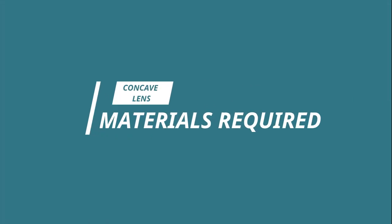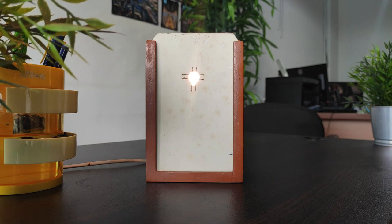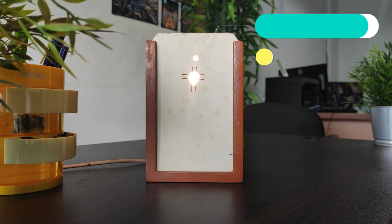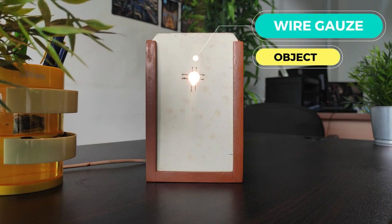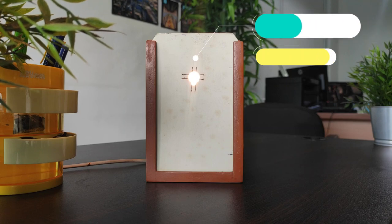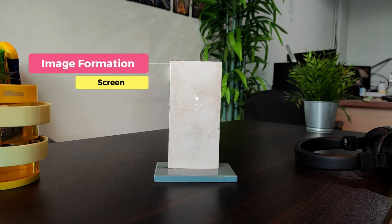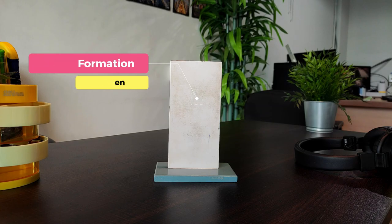Let's take a look at the materials you'll need for this experiment. We need an object first and foremost. Illuminated wire gauze acts as an object in this case. Illuminated wire gauze, as shown in the video, is a wire mesh that we will use as the object. After that, we'll need a screen for this experiment. On the screen, an image of the object formed by the combination of convex and concave lenses will be displayed.